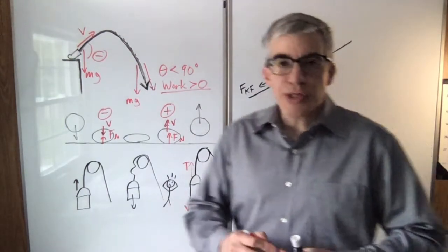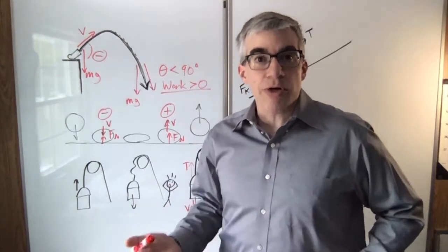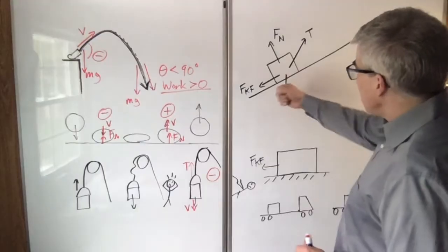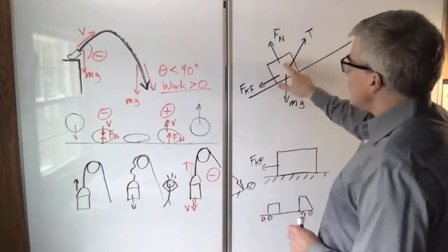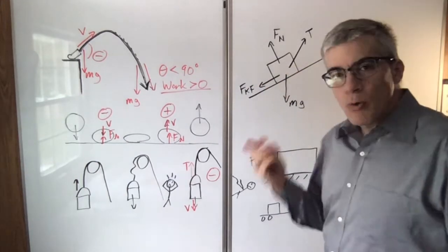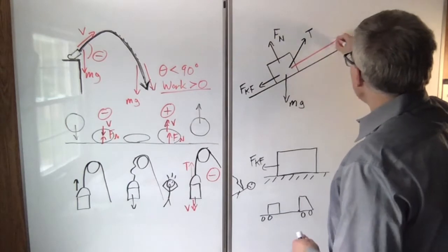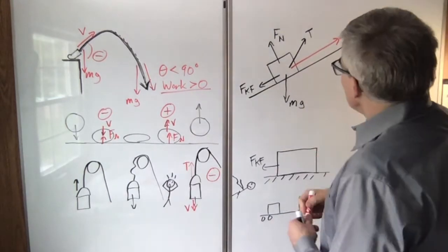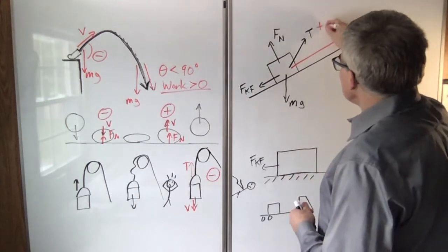If the force is trying to make it go faster, it's doing positive work. If the force is trying to make it go slower, it's doing negative work. I'm pulling something up an incline with a rope that's at an angle to the incline. I've got normal force, I've got gravity, I've got force of kinetic friction. Which way are we going? That's the crucial thing. We're headed this way. This is our delta x. So the tension is making a small angle, so the tension is doing positive work.